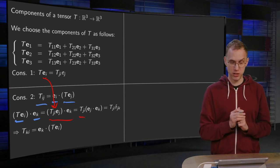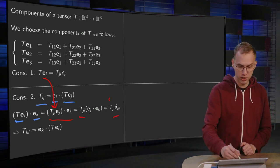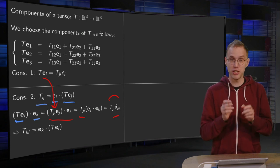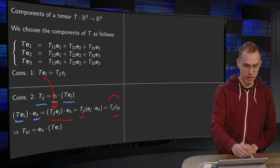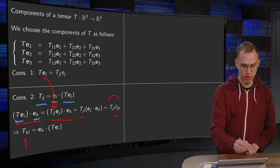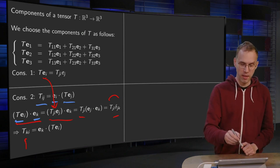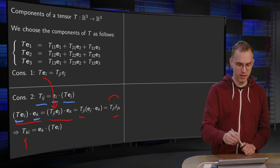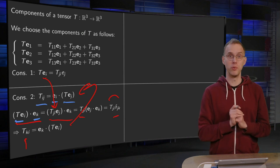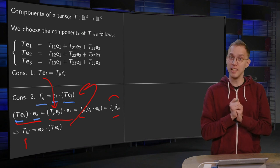And we have EJ inner product EK. Always pick an orthonormal basis, so this equals delta JK, and we can execute the sum TJI delta JK. Summing over J gives you TKI. So TKI equals this inner product over here, EK inner product T of EI, and then of course if you rename the indices, you obviously get consequence two.